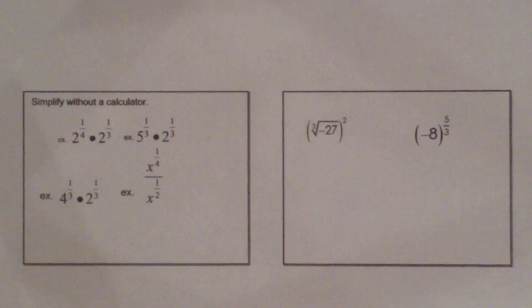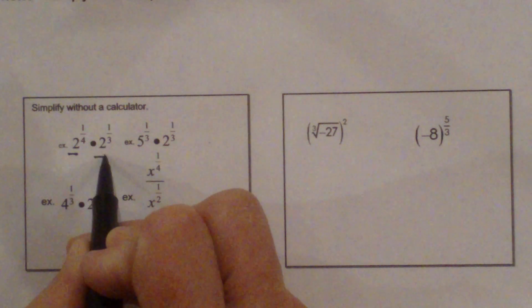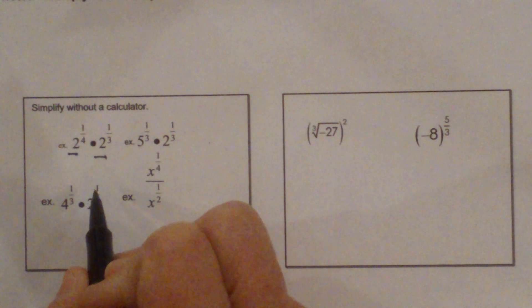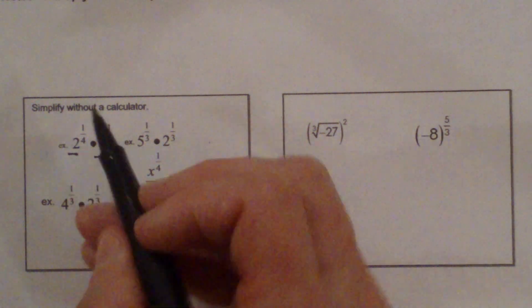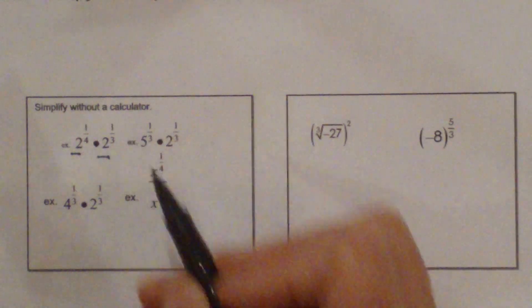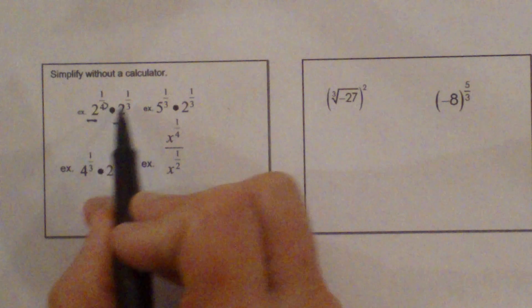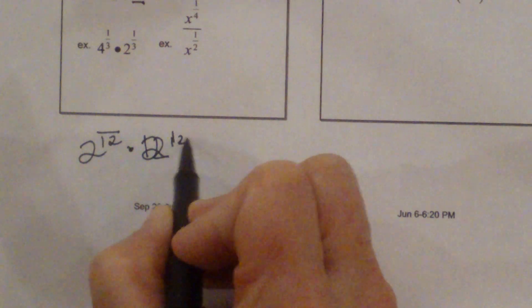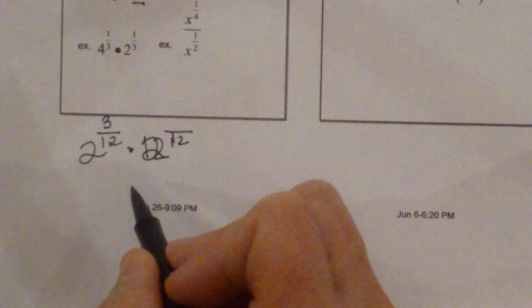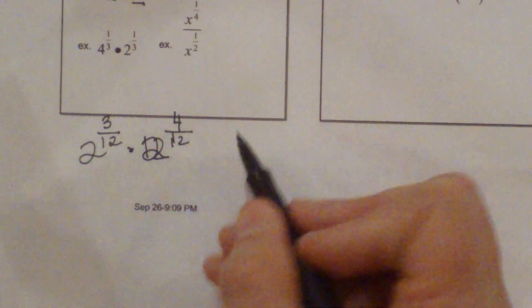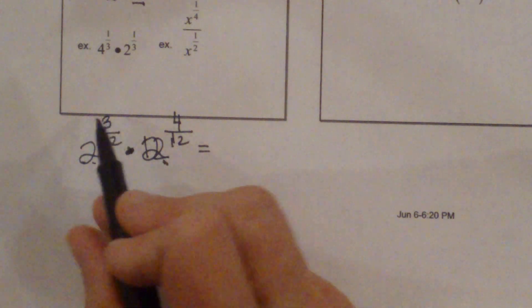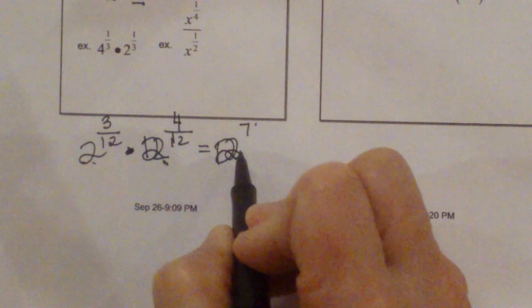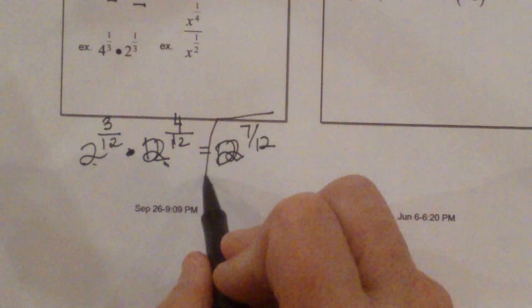Okay, now we're going to simplify without a calculator. Let's think about our exponent rules. If we're multiplying like bases, we add exponents. So we have 2 to the 1 4th times 2 to the 1 3rd. I have to get a common denominator of 12. So 1 4th becomes 3 12ths, and 1 3rd becomes 4 12ths. So when I'm multiplying these like bases, I'm going to add the exponents — it's going to be 2 to the 7 12ths. And that's how you simplify that first one.